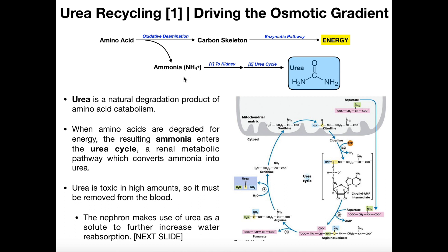Ammonia itself is toxic. If it builds up — say, in neurons — it can actually cause the death of those neurons and all sorts of issues, things like mental retardation if it occurs early in life. So ammonia, through various processes, is transported to the kidney, which is where the urea cycle occurs. The urea cycle is an enzymatic pathway that converts ammonia into an excretable product called urea. Urea is eliminated in the urine, and it is the final degradation product of ammonia, produced by the urea cycle.